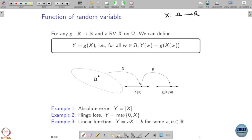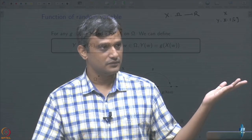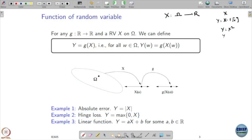You already see one version of this: we defined y equals x minus the expectation of x. Can we think of y as a function of x? Yes — you are basically subtracting a constant amount. That's one example. You may also be interested in other functions like y equals x squared or y equals x cubed — all are functions of random variables.